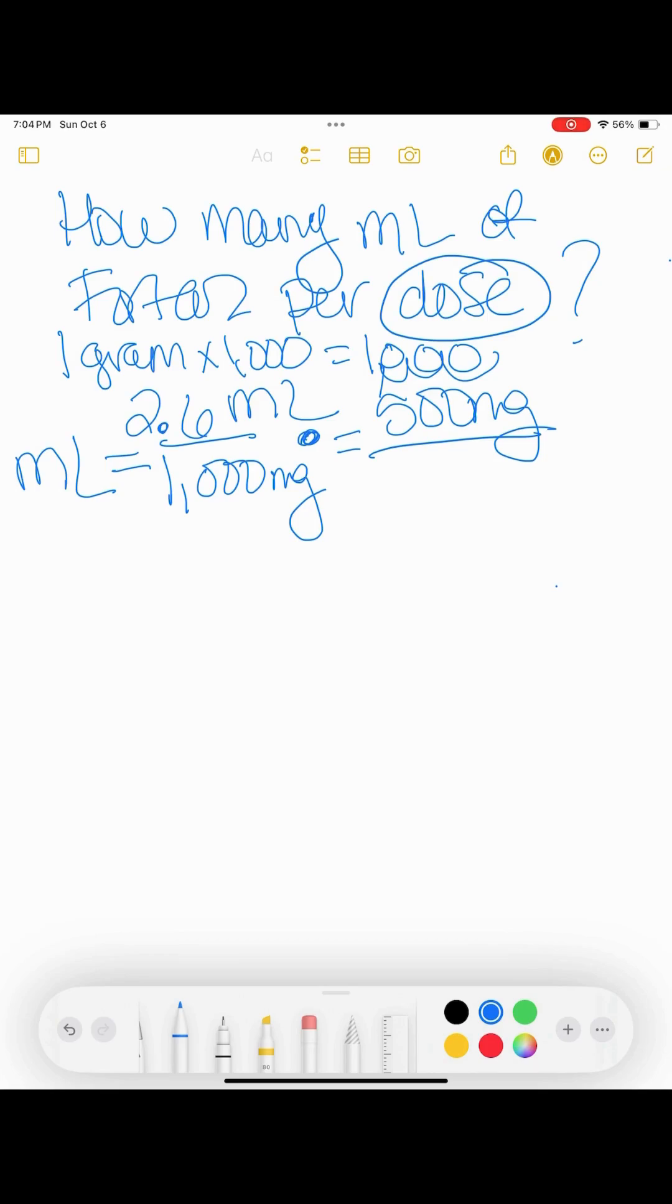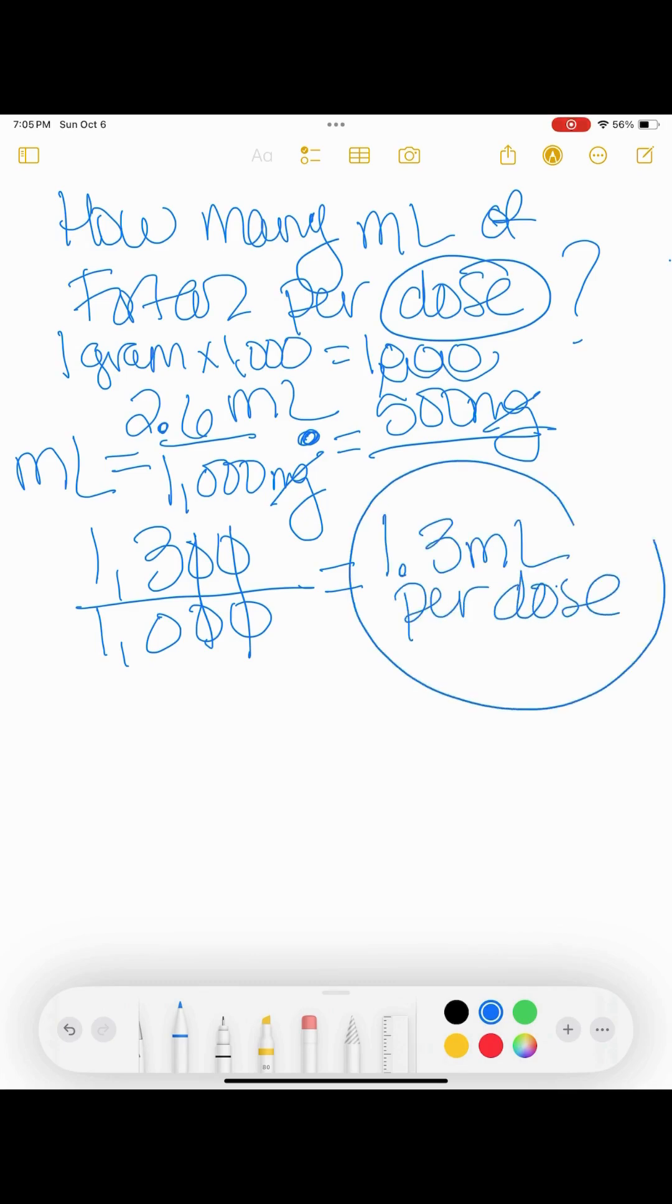So what you're doing is you are multiplying across in fractions. If unit of measurements are across from each other, you can cancel them. We have to cancel milligrams because we need to end up with milliliters. So we're canceling out milligrams. You multiply across and you're going to get 1,300 divided by 1,000. You can cancel out those two zeros. You are dividing 13 by 10 and the answer is going to be 1.3 milliliters.